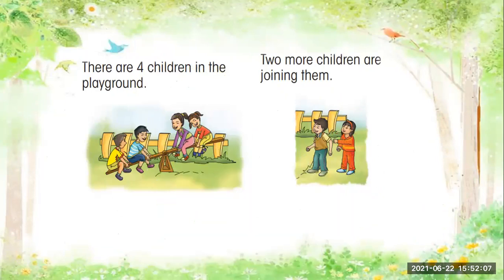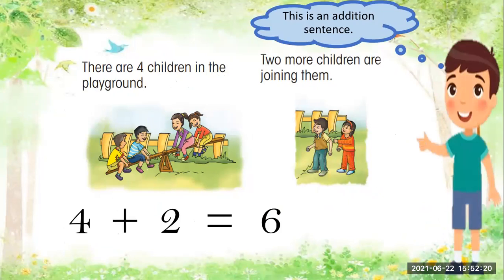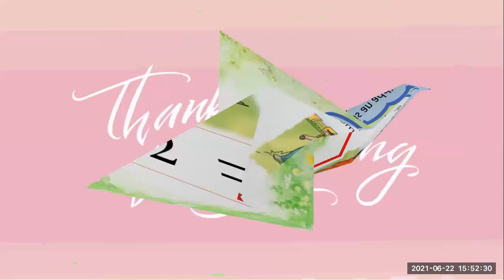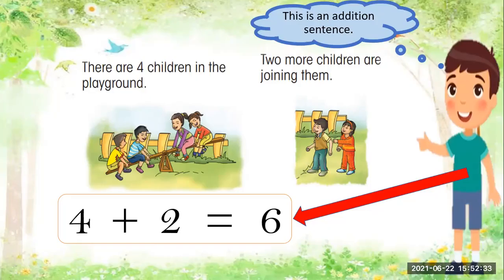There are four children in the playground and two more children are joining them, so that is equal to six. This is an addition sentence: four plus two is equal to six. It's very easy — just look at the picture and write the number sentence. Four children plus two children joining them equals six. That is the addition sentence.